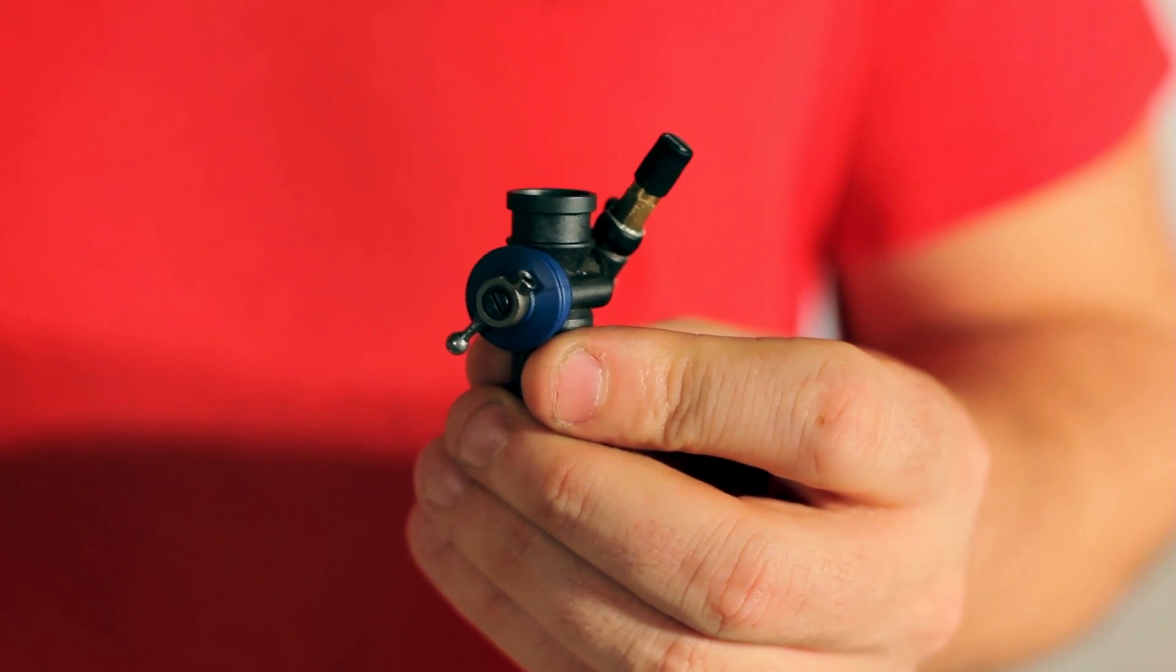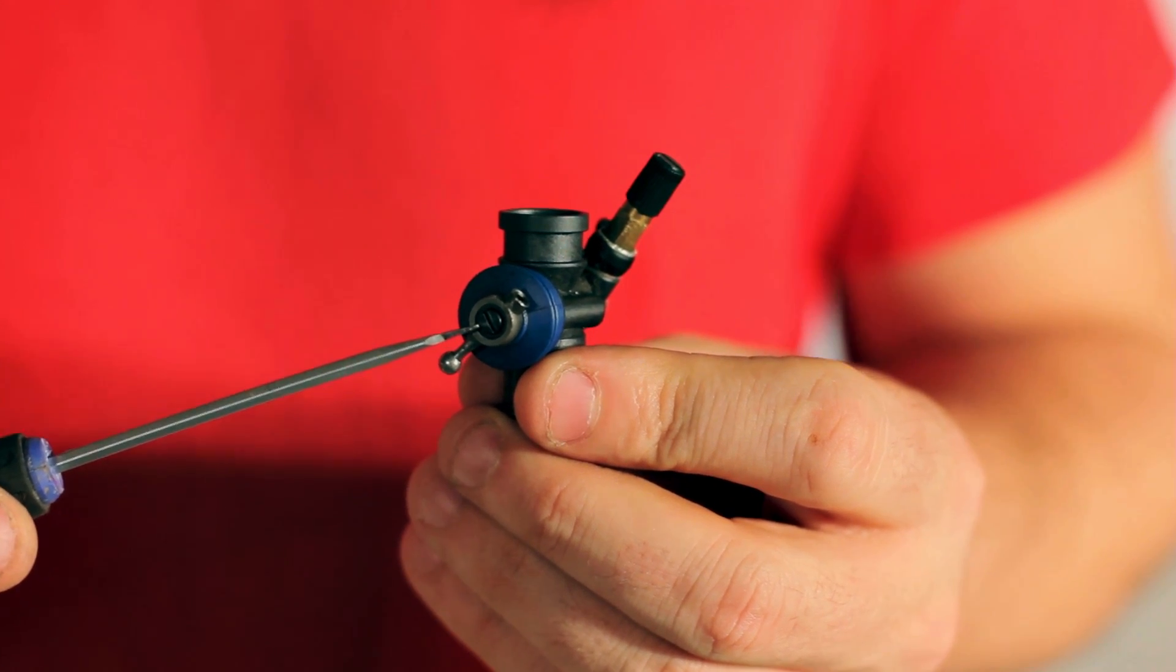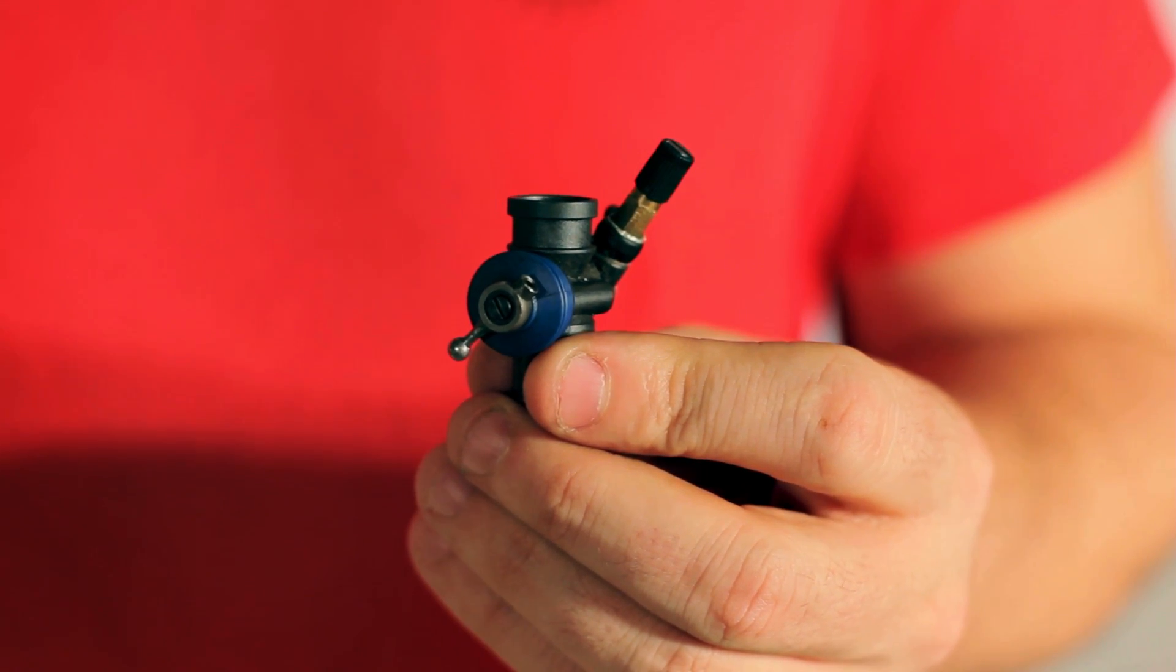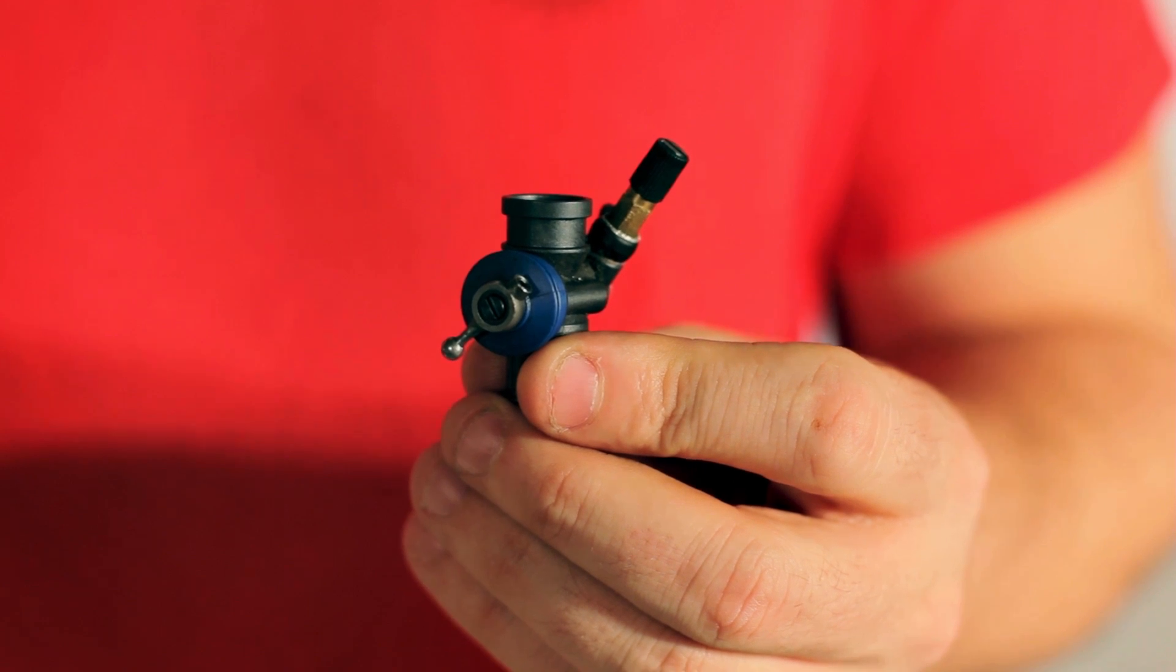The next thing I want to show you is the low-speed needle jet, and that's located right here. That's going to adjust the fuel flow going to the engine at idle to mid-throttle.